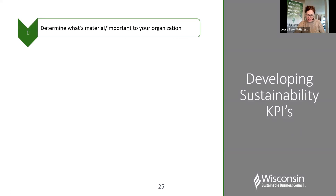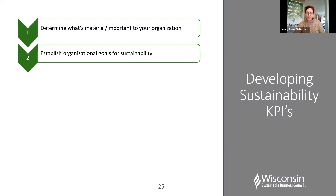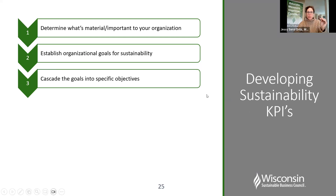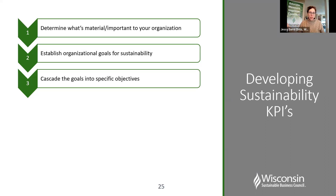For developing KPIs: step one is determining what's material and important. Step two is establishing organizational goals for sustainability — how can your overall organizational goals align with your commitment to sustainability? What do you want to accomplish overall as an organization? Then cascading those goals into specific objectives. For example, if you have an organizational goal to become carbon neutral, how can you look at what metrics you're tracking and what goals you're establishing to develop a KPI that helps you measure how you will achieve that over time?